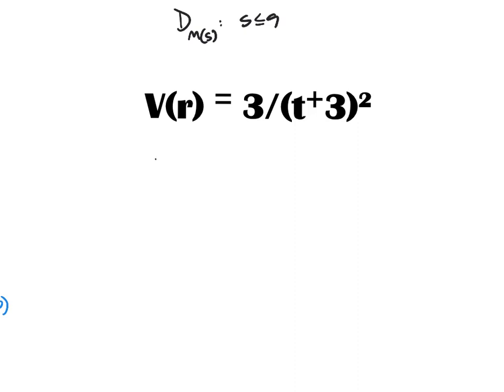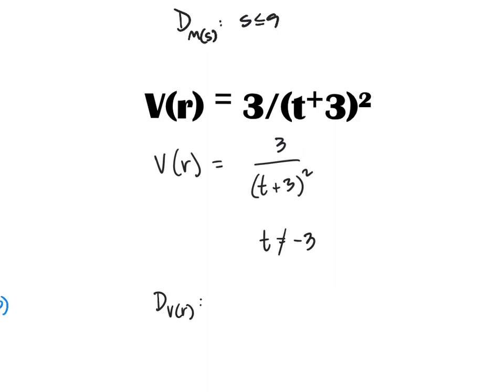Here I have a rational function v(r): 3 over (t + 3) squared. Again, I don't want the denominator to equal zero. The denominator equals zero only when t equals negative three, so the domain of v(r) is t ≠ −3. In interval notation, that's (−∞, −3) ∪ (−3, ∞). That's how we find the domain of functions with restrictions based on division by zero or even roots.